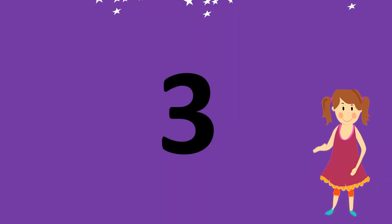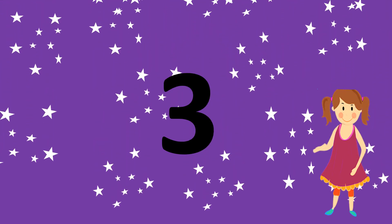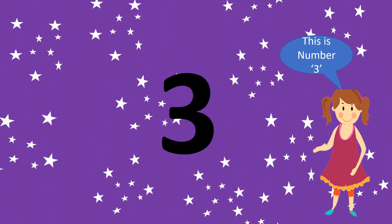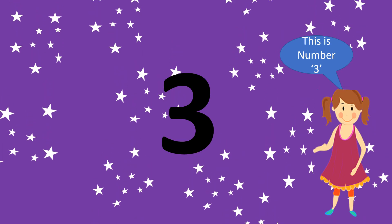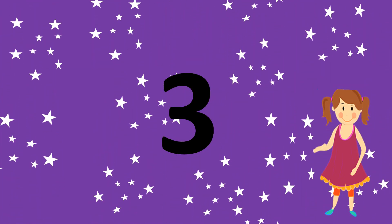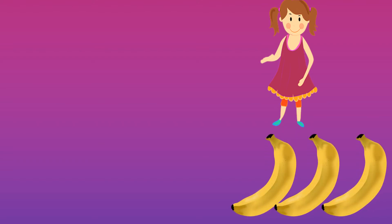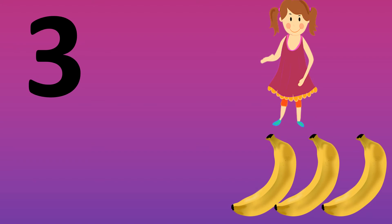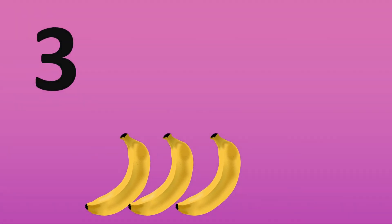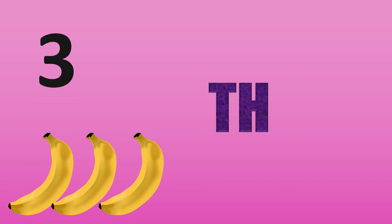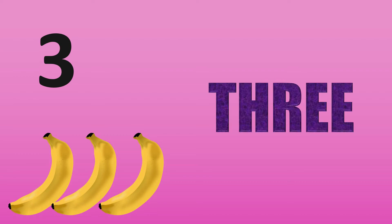Let's move on to our next number. Which is our next number? This is number three. Yes, this is number three. Now let's count how many bananas are there. There are three bananas. Correct — there are three bananas. Now let's spell the number three. T-H-R-E-E, 3.